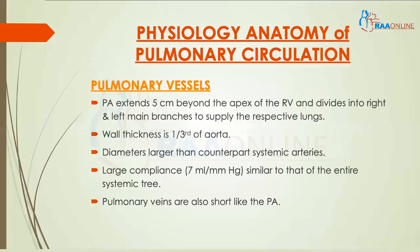The pulmonary artery extends five centimeters beyond the apex of the right ventricle and divides into the right and left main branches — the right main pulmonary artery and the left main pulmonary artery — to supply the respective lungs. The wall thickness of these pulmonary vessels is usually one third of the aorta, but their diameters are larger than their counterpart systemic arteries. Since their wall thickness is only one third of the aorta, they have very good compliance and can accommodate a large amount of pulmonary blood flow. The compliance of these pulmonary vessels is similar to that of the entire systemic tree. The pulmonary veins are also short and highly compliant like the pulmonary arteries.